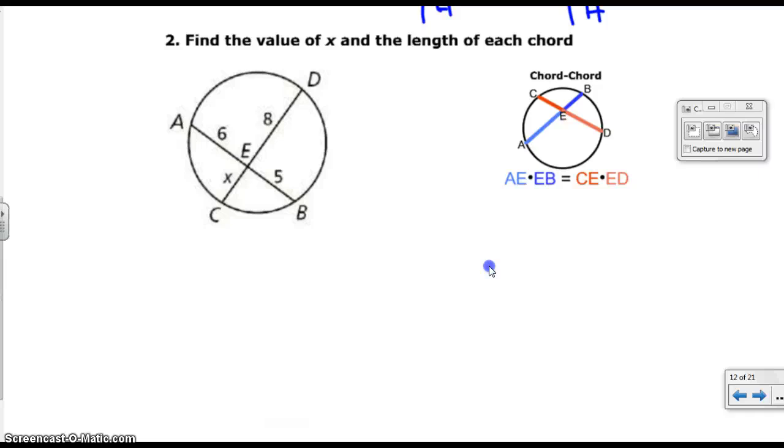Find the value of x and the length of each chord. So, once again, you look off to the right, you see AE times EB equals CE times ED. So, we're going to use that same thing. So, AE is 6. We're going to rewind. This one is 6. And we know it has to be multiplied by EB, which is 5. And we have to get that equal to CE, which is our x, times our ED, which is 8. And this one's a lot easier than the one before. 6 times 5 is 30, and that's equal to 8x.